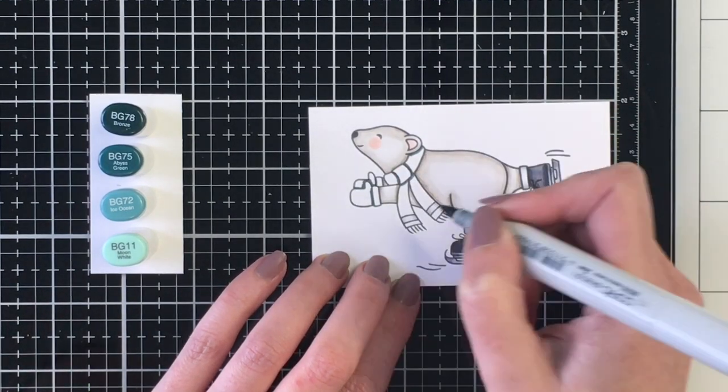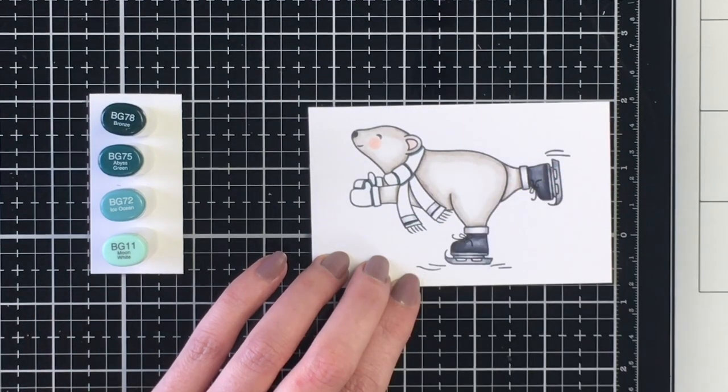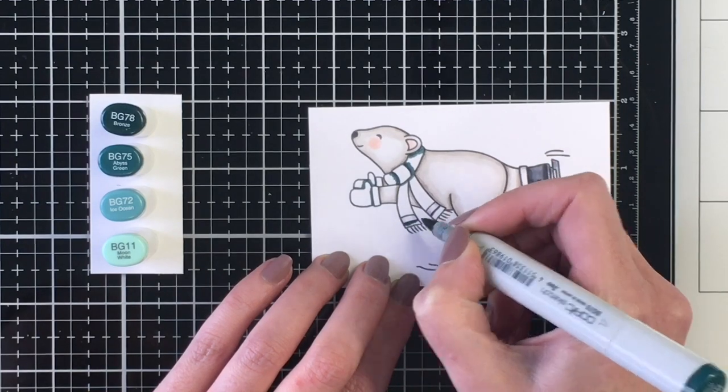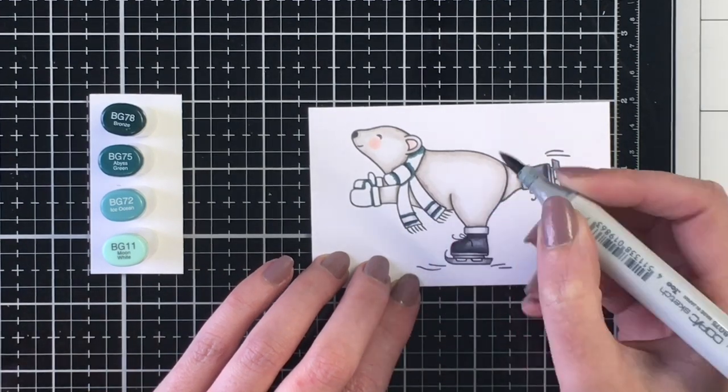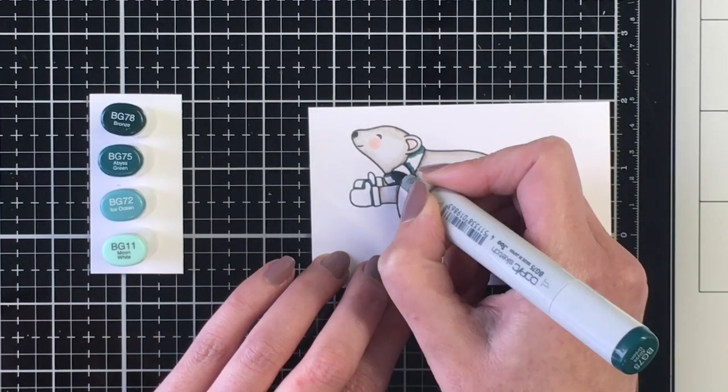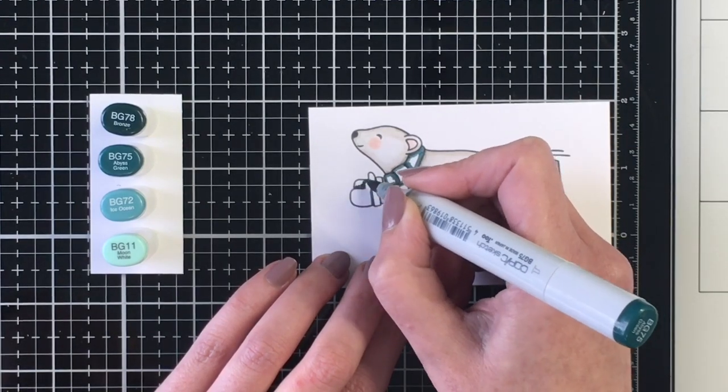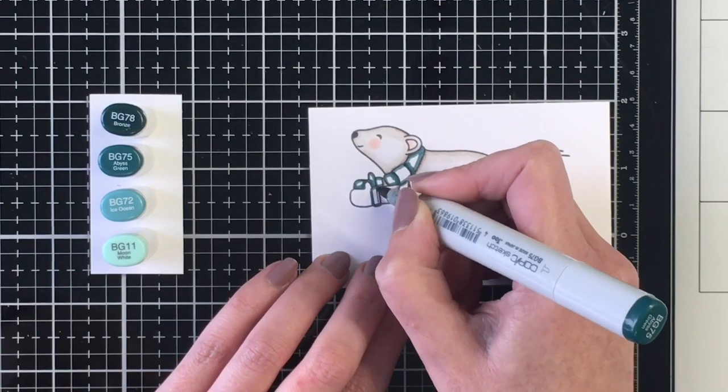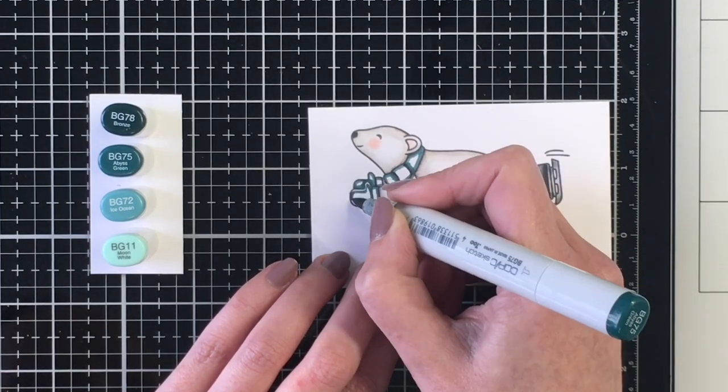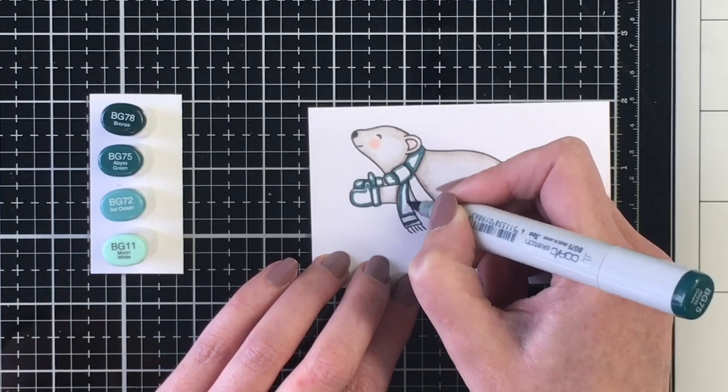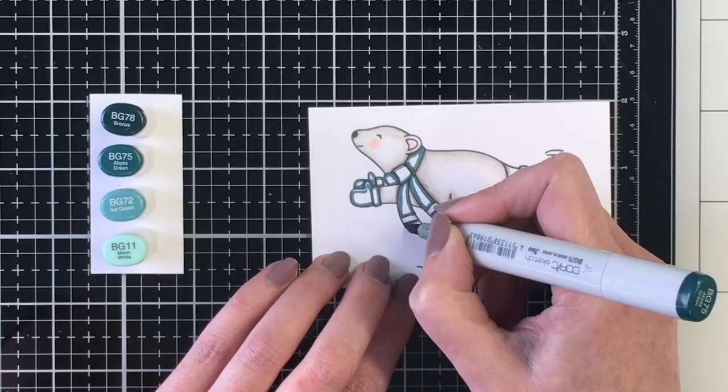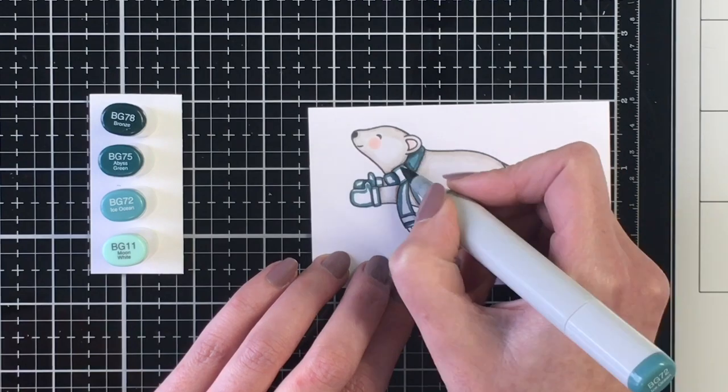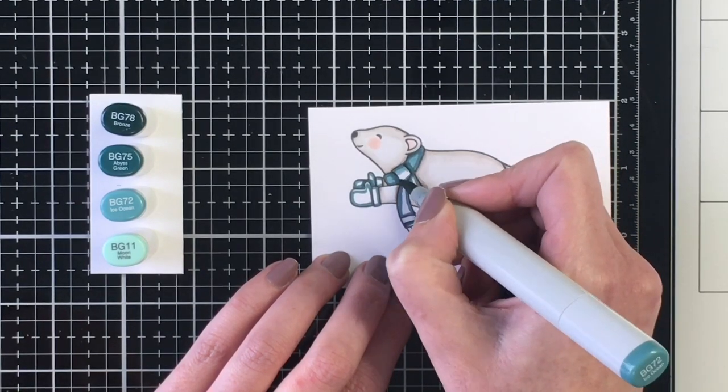So the colors that I'm using is BG78, BG75, BG72, and then I'm going to use the BG11 as my lightest. You can see there that I did add some white highlights to his scarf where there's the little rectangles down towards the bottom of each of the ends of his scarf. And I also left the top of his boots white as well.